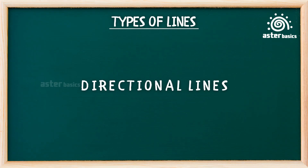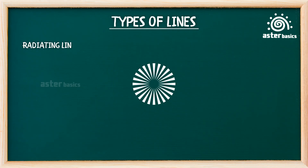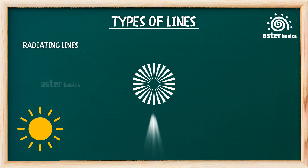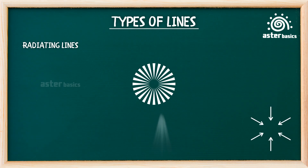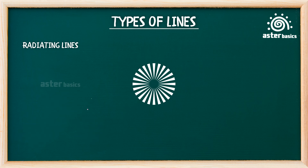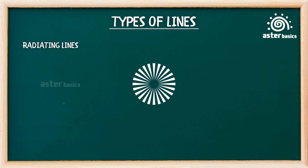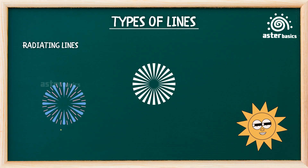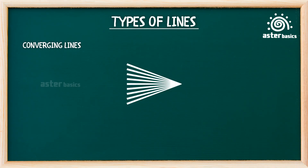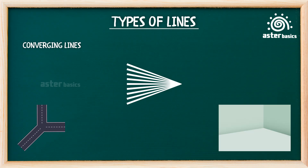Directional lines. Radiating lines: lines that spread outward from a central point, like sun rays. Used for showing energy, light, or things coming from a center. These lines are like fireworks bursting out in every direction — or like the rays of the sun giving warm hugs to everything. Converging lines: lines that come together at a single point, like roads meeting at a corner. Used for creating perspective or showing focus in drawings. Converging lines are like friends running to hug each other at one spot.